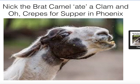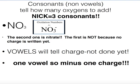Here's the rule. Consonants — those are non-vowels — tell you how many oxygens to add to your polyatomic, also called an oxyanion because it tends to have a lot of oxygen and a negative charge. The vowels will tell you the charge. Almost all polyatomic ions have a negative charge, with the exception of ammonium, NH4+, which has a positive charge.